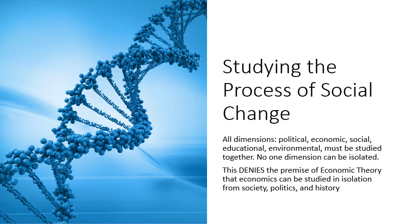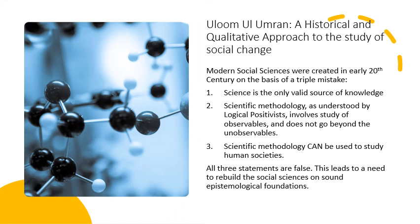This denies one of the basic premises of modern social sciences: that you can study each dimension in isolation. We need to develop a new approach to the study of social change because modern social sciences were created on the basis of a triple mistake.